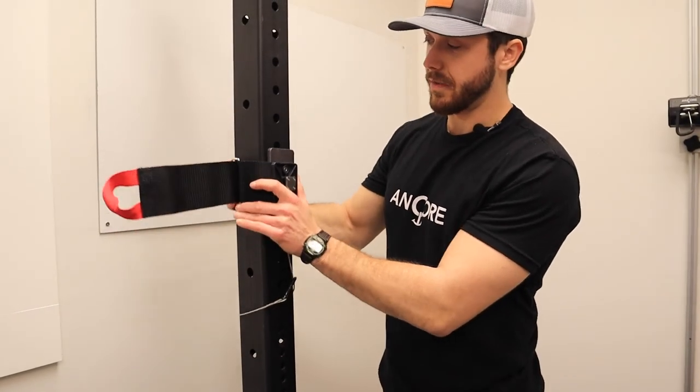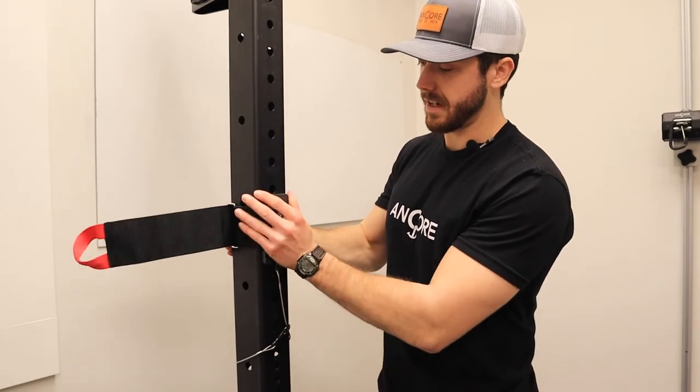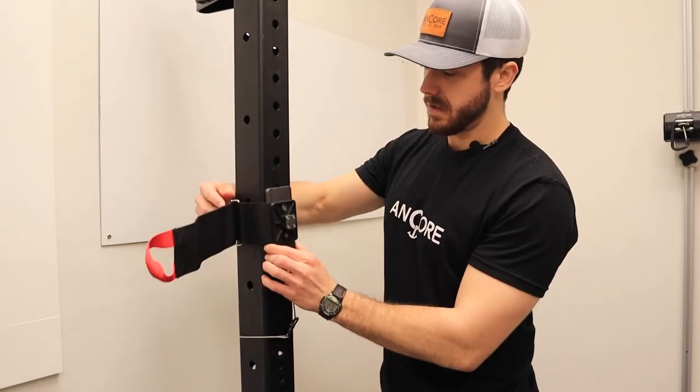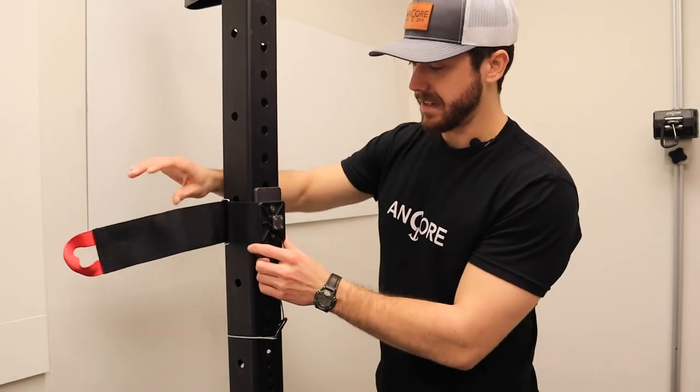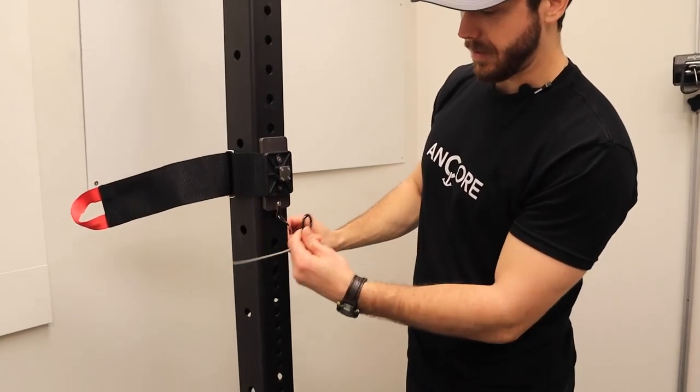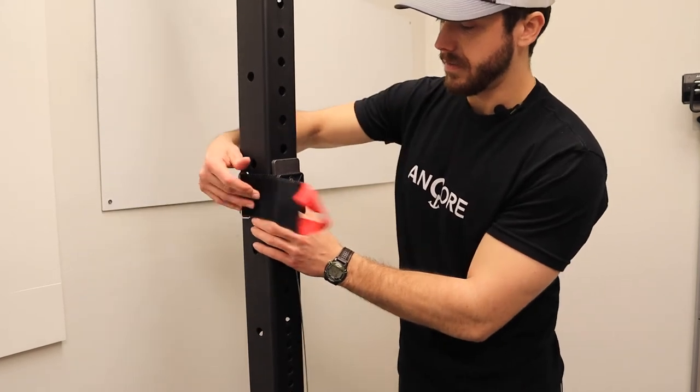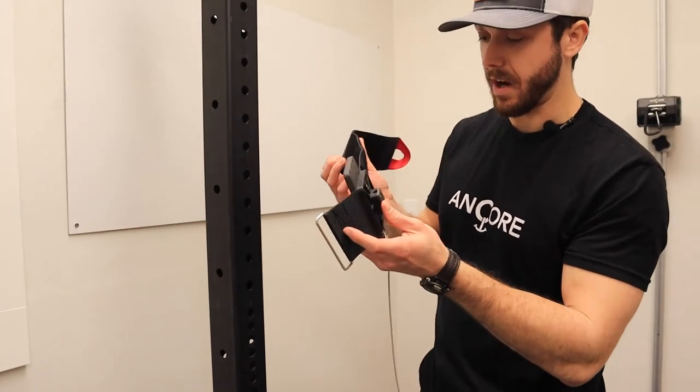The way that works here, you just undo the Velcro. If you want to adjust the height, you can just slide that up and down and then tighten it up wherever you need. To fully take it off, you can just unclip the carabiner, steel safety pin, finish undoing the Velcro, and you can take it right off your rack.